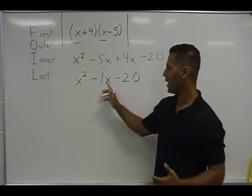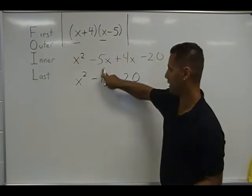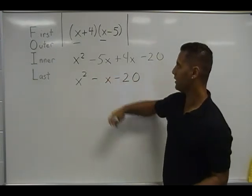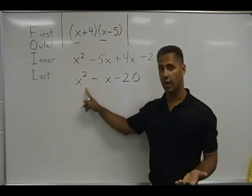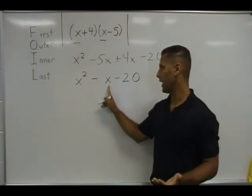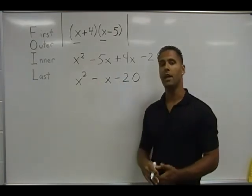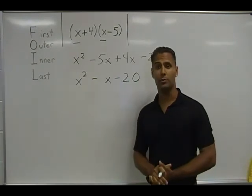Now remember, whenever you have 1 as a coefficient, you really don't need it. So our final product of x plus 4 and x minus 5 is x to the second power minus x minus 20. And that's how you multiply a pair of binomials together.